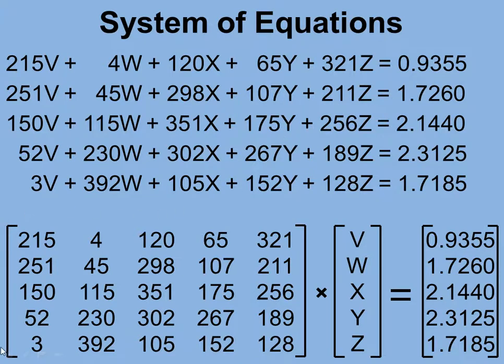What we have to have is a matrix of all the coefficients of all the equations, multiplied by a matrix of all the unknowns, and we set that equal to all of those totals in a matrix.